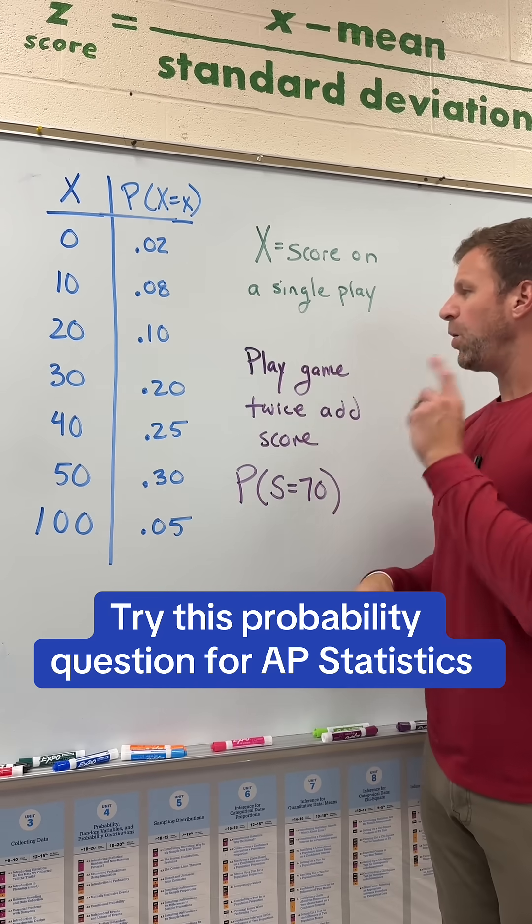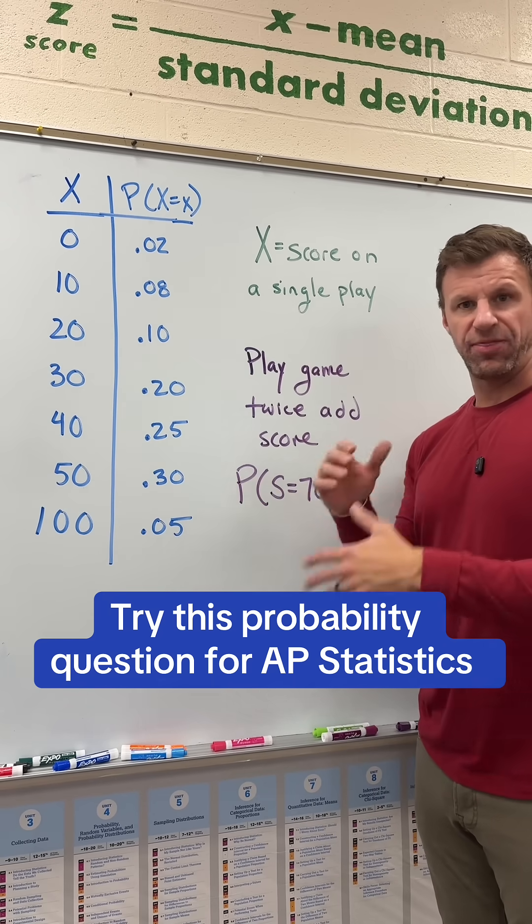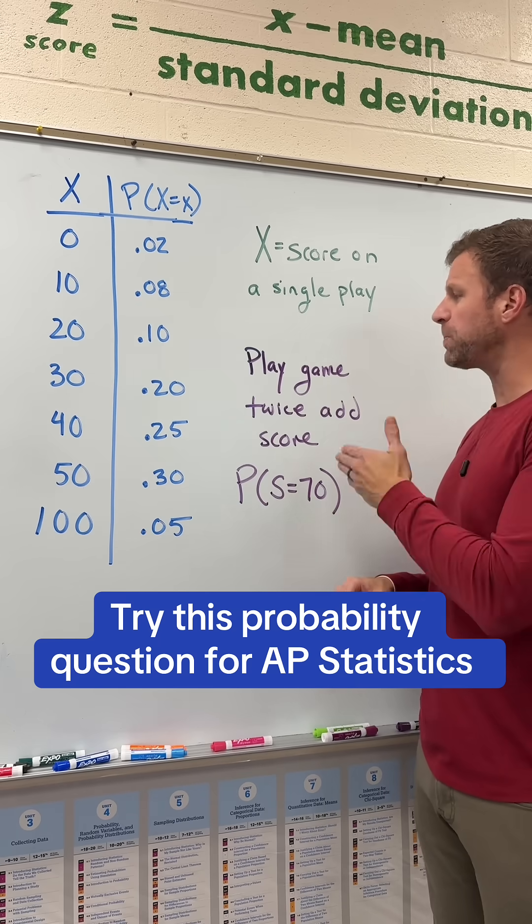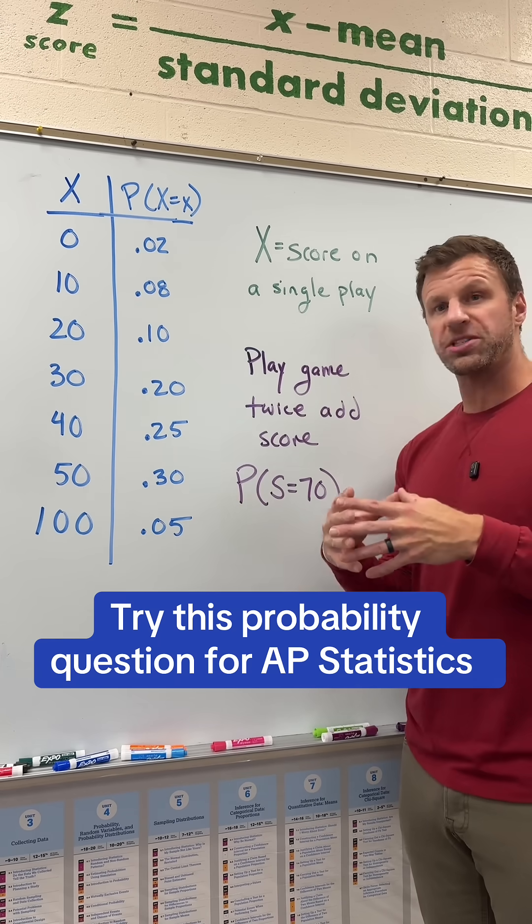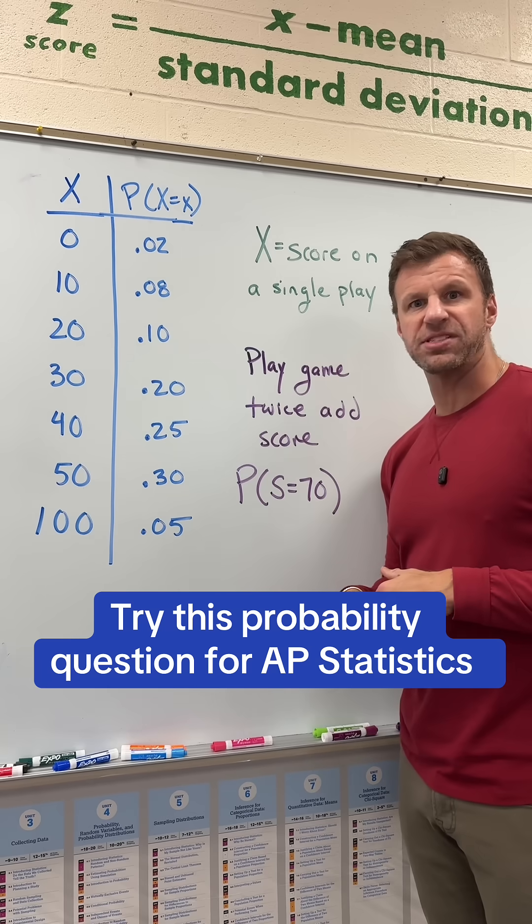And we have the associated probabilities for each of those outcomes in this probability distribution. Now here's the deal: What if we play this game twice and the scores of each game are independent of each other? What is the probability that we add our two scores together and get a sum of 70?